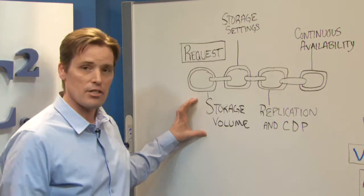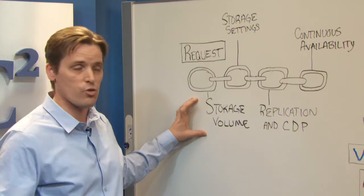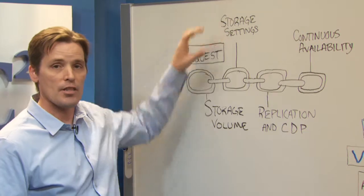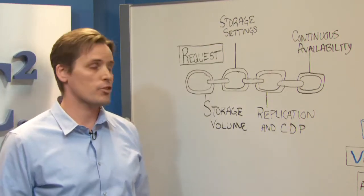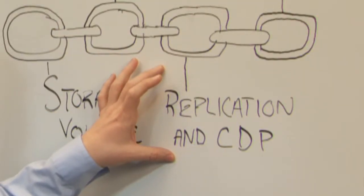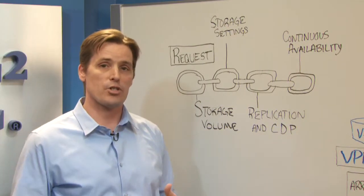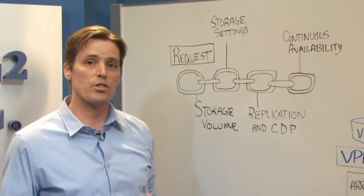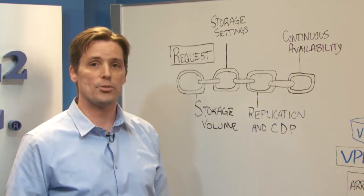The request comes in and the first thing that's done is a storage volume is created — typically by a different person in the organization, a storage administrator. That storage volume then has settings specified to it: this might be tiering, thin provisioning, or snapshots and clones. The request is then handed off to somebody who is going to provision the replication for the storage element, which might also include continuous data protection. Then the storage request is handed off to somebody who would configure continuous availability for the application data, for a single site or across multiple sites.